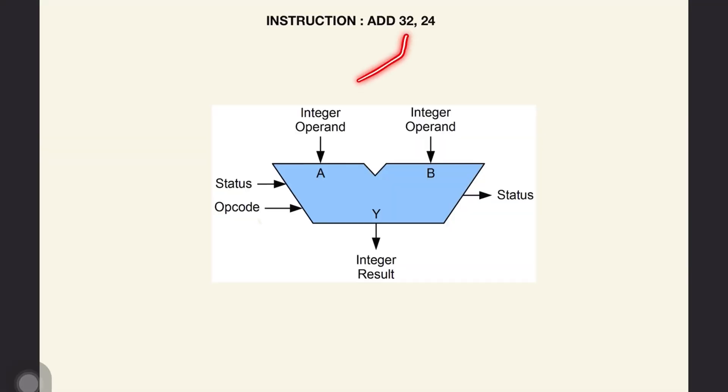An ALU takes an input called operands. These are the values on which the calculation will be performed. And another input called the opcode. This specifies which particular operation will be performed - that is, to add or subtract or to perform AND or XOR.